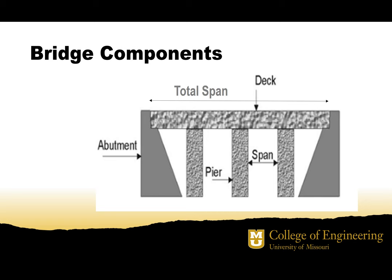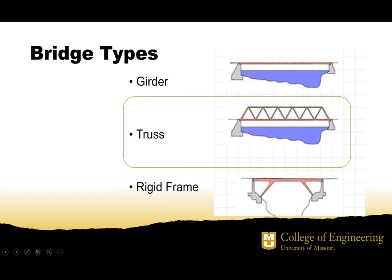The simplest form of a bridge spans between two points — in this case an abutment on each side. You must always have a deck where the traffic or vehicles would drive on. If your total span is too long, you can add piers to cut the span into smaller spans. For our competition there are no piers — your bridge is going to be simply supported between two points, so we must move into other types of bridges.